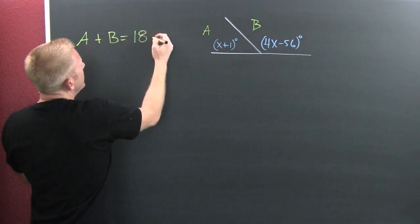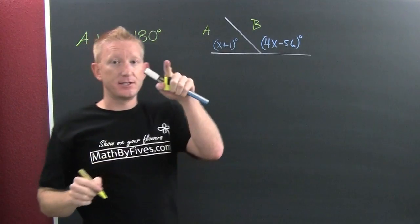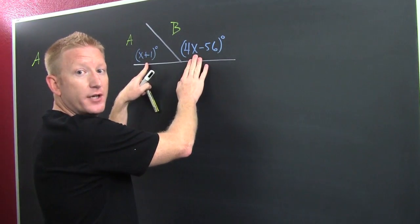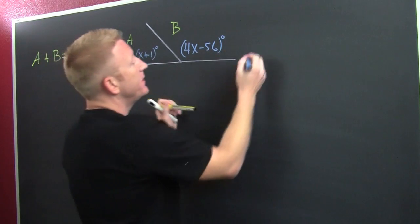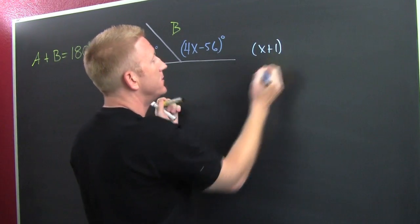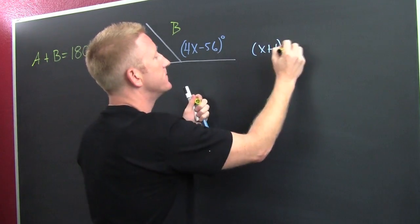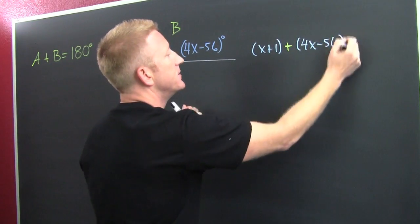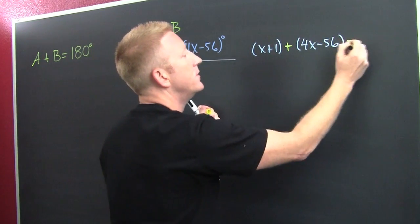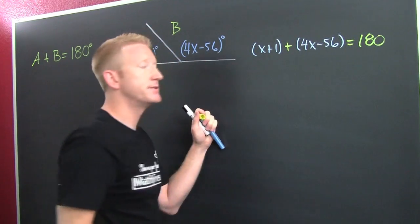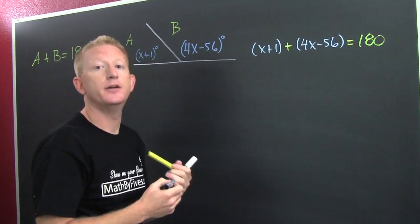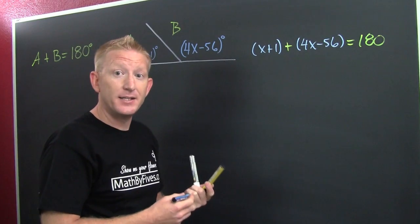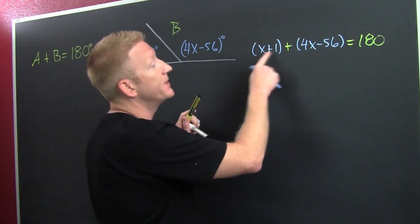More specifically, A plus B equals 180. So I need to set the sum of these two expressions equal to 180 degrees. Here we go: x plus 1, plus 4x minus 56, needs to be equal to 180 degrees. This is an application of linear equations.